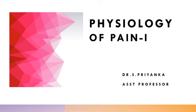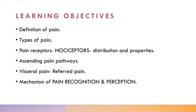So what is pain? First, the definition of pain and then the types — various things we will see in today's class. This topic of pain will be covered in two classes; today is the first part. The learning objectives for today's class are: the definition of pain, types of pain, pain receptors (nociceptors), their distribution and properties, ascending pain pathways, visceral pain, deep somatic and referred pain, and the mechanism of pain recognition and perception — how the pain is recognized by the cerebral cortex and perceived by the central nervous system.